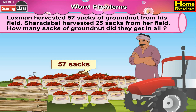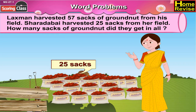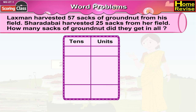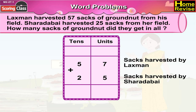Lakshman harvested 57 sacks of groundnut from his field. How many sacks of groundnut did they get in all? Lakshman harvested 57 sacks of groundnut and Shaakabai harvested 25 sacks.